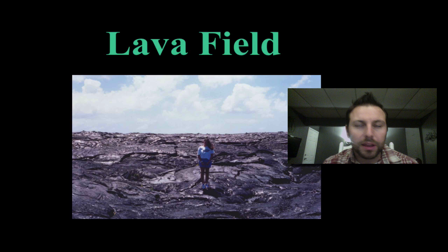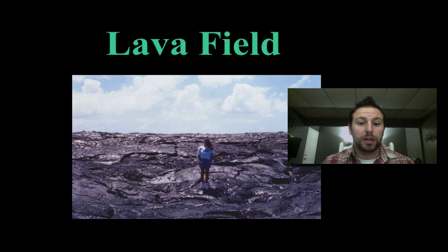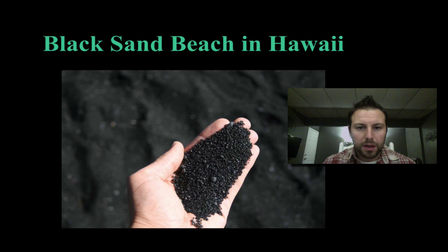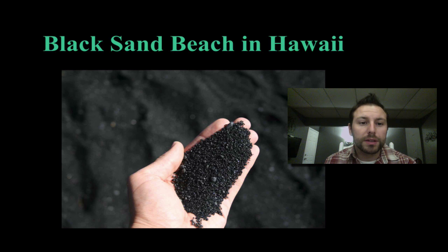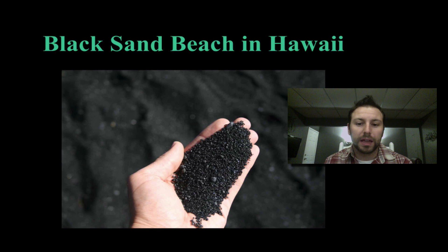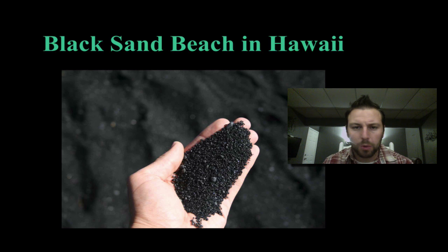When this material solidifies, you get something like this — a lava field. As we just covered with weathering, erosion, and deposition, we can take this solid mass and eventually break it down into what we see on the black sand beaches of Hawaii. This is nothing more than lava that has cooled, solidified, and been broken down into smaller sediments by the elements.